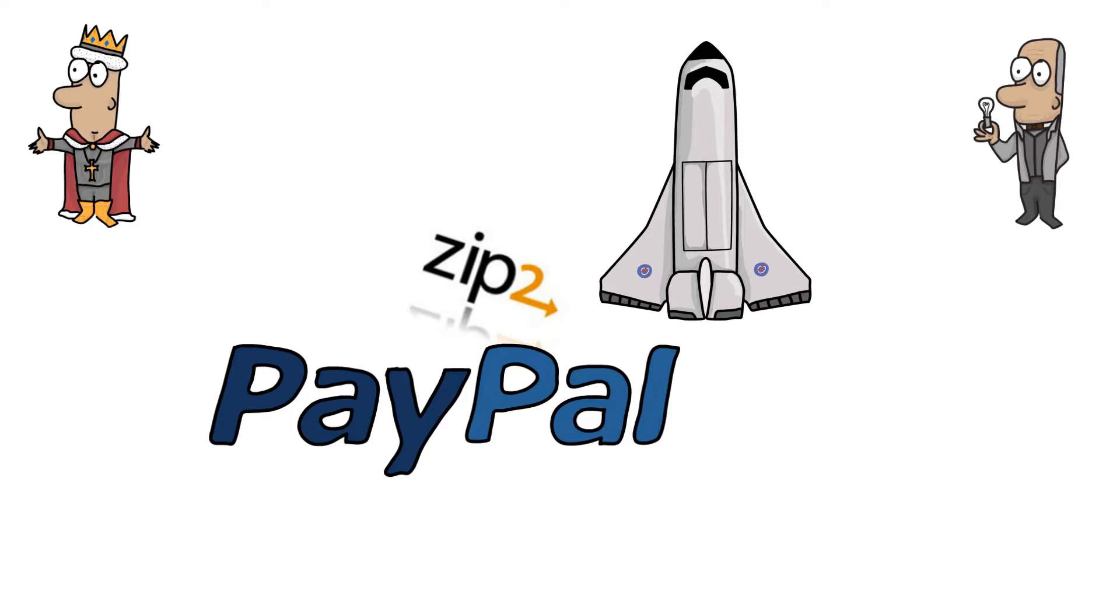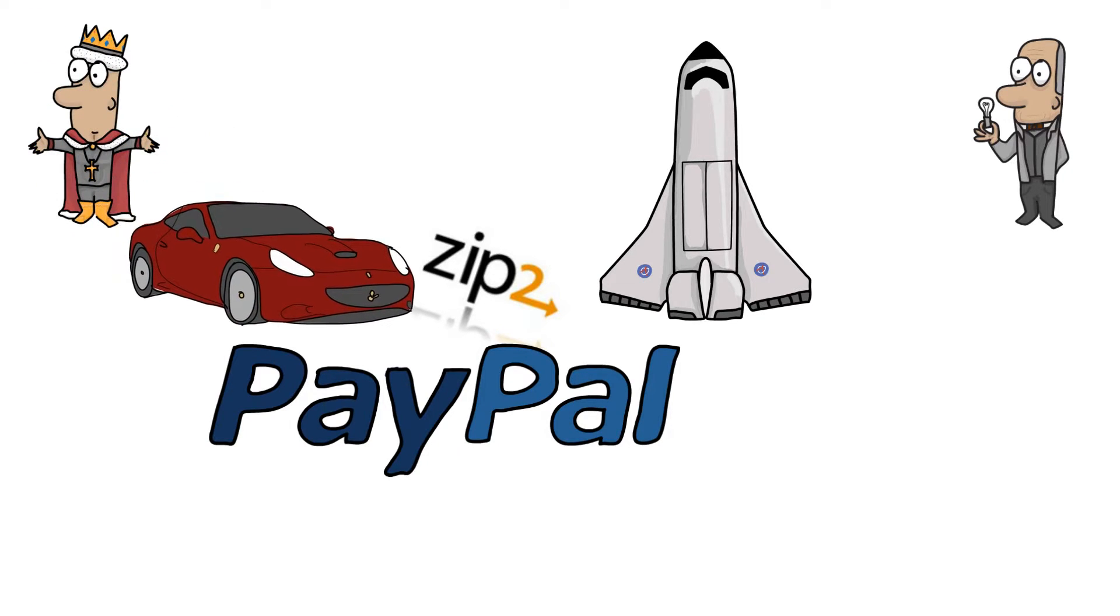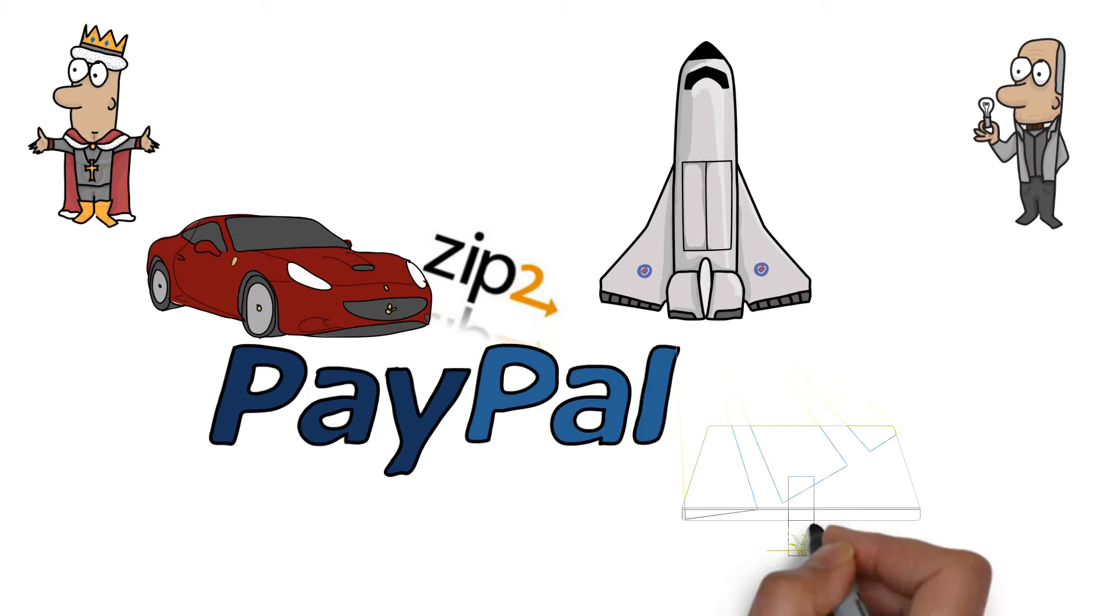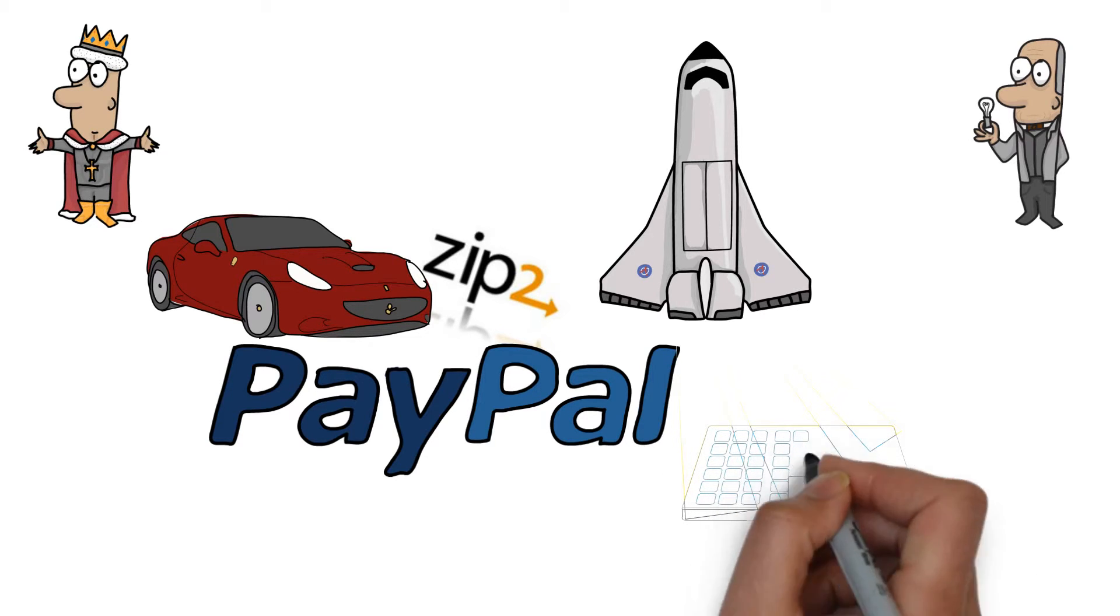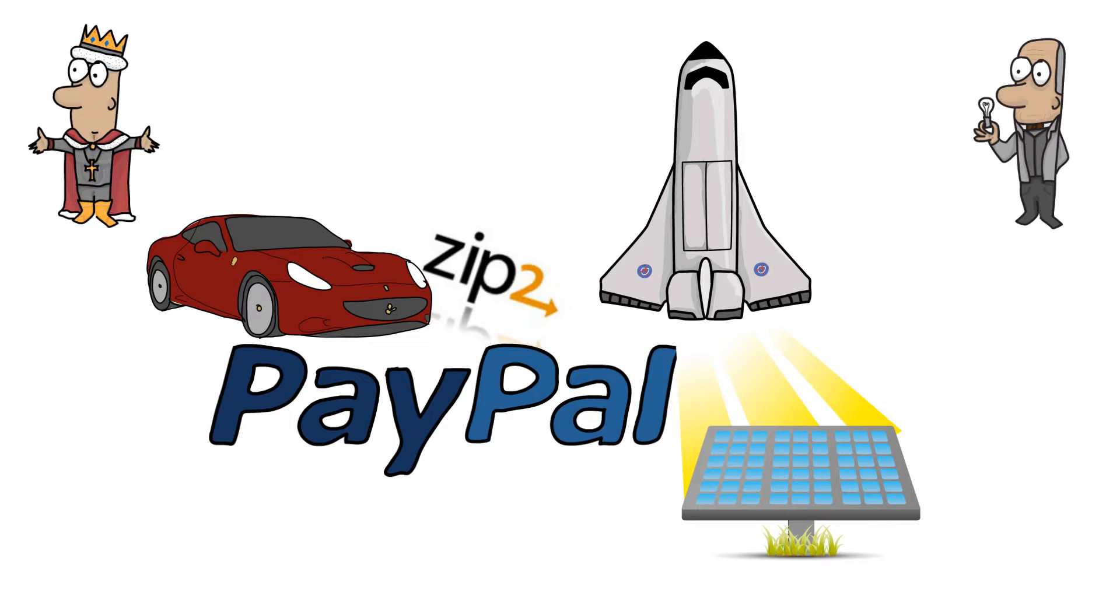While conquering space, Musk also set his sights on revolutionizing our everyday lives and has played an important role as both Tesla Motors CEO as well as the chairman of the board of SolarCity. This may leave you wondering, how does he get it all done?